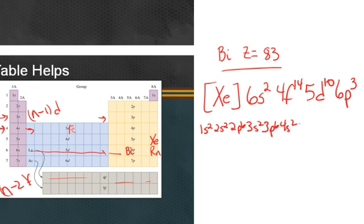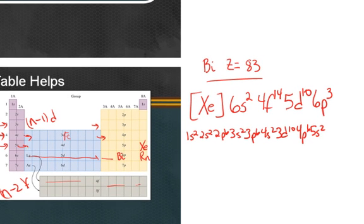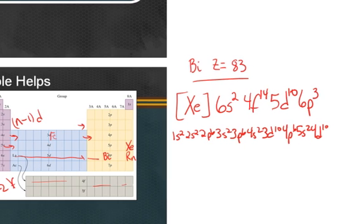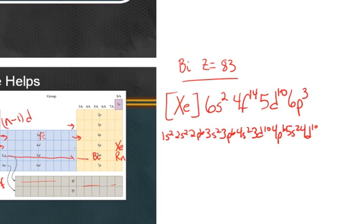Then I'm here, which is n minus 1, 3d10. Here, 4p6, fill across, come back around, 5s2, you're here, 4d10. Let's see, go across to the 5p6. That gets me up to xenon.